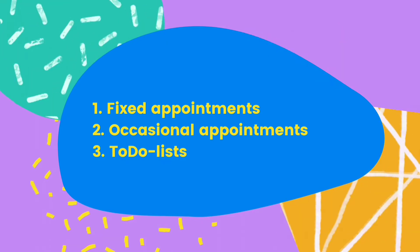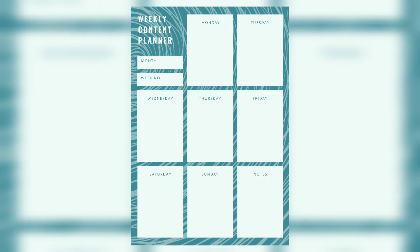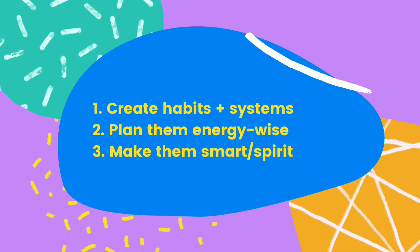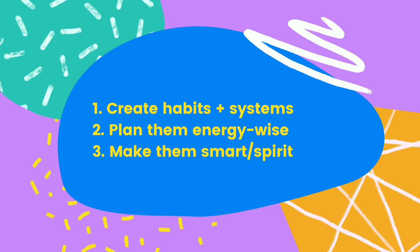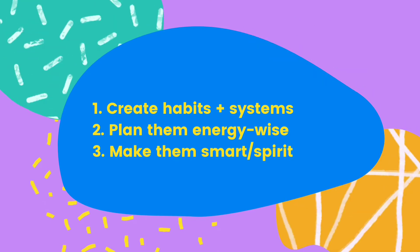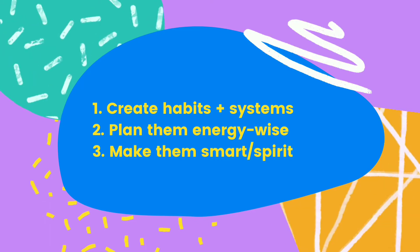And that brings us to the next point: a content planner that lets you plan ahead, batch your work, avoid multitasking, and note down all your creative brainwaves for later. To this calendar you can apply the same tips — create habits and systems, plan them energy-wise, and make them smart and purposeful.